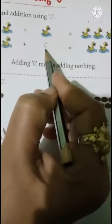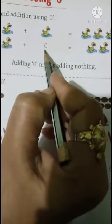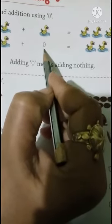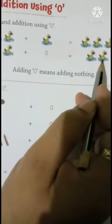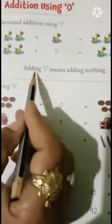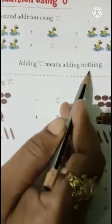Children, when you add 0 to any number, that number stays the same. Adding 0 means adding nothing.